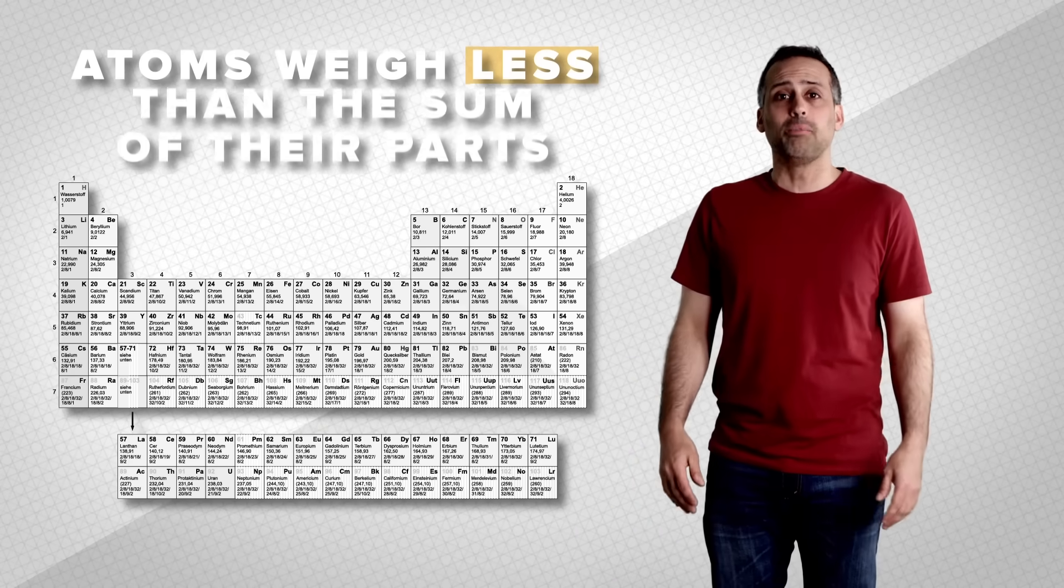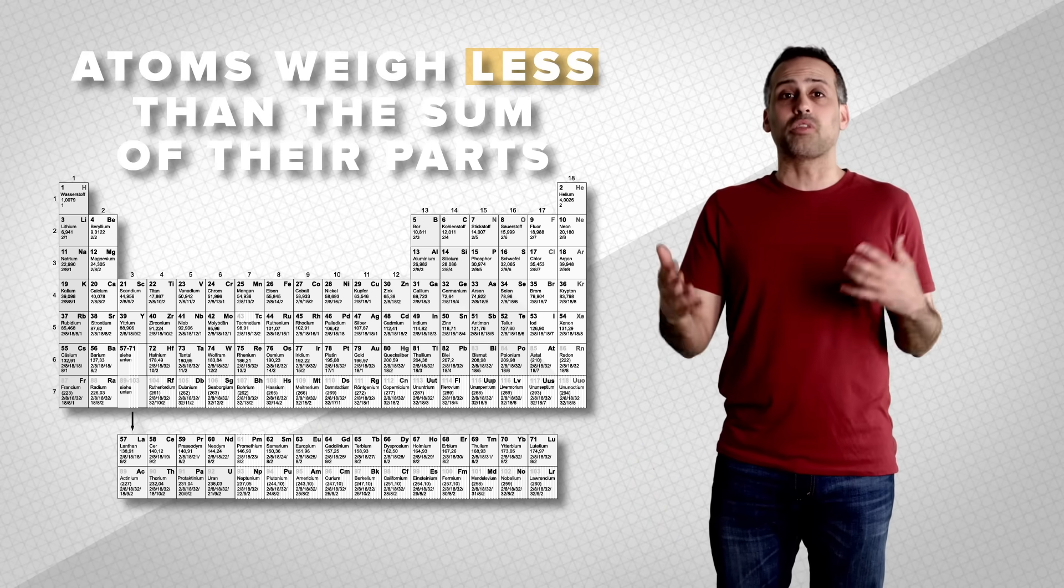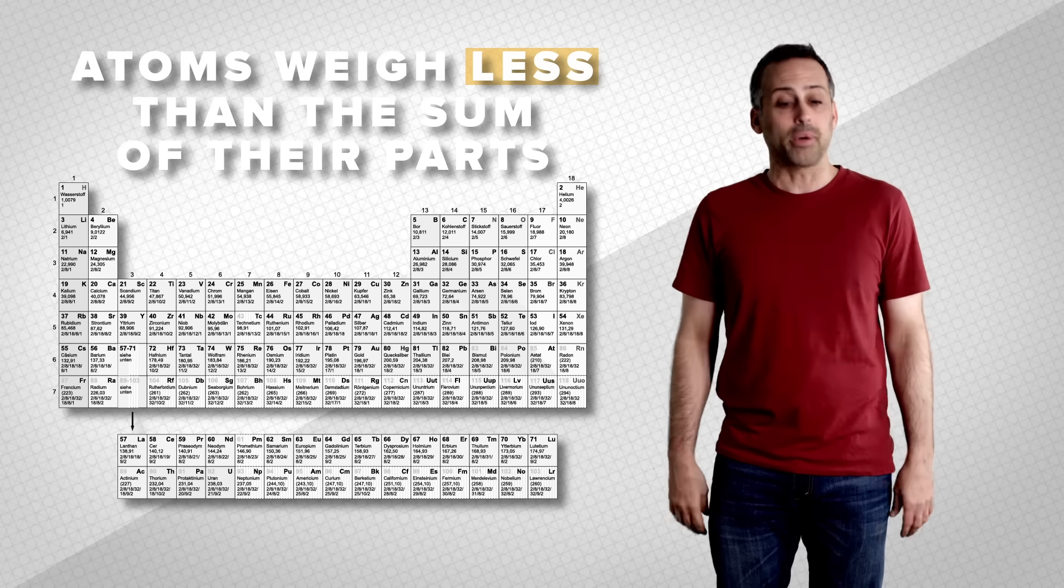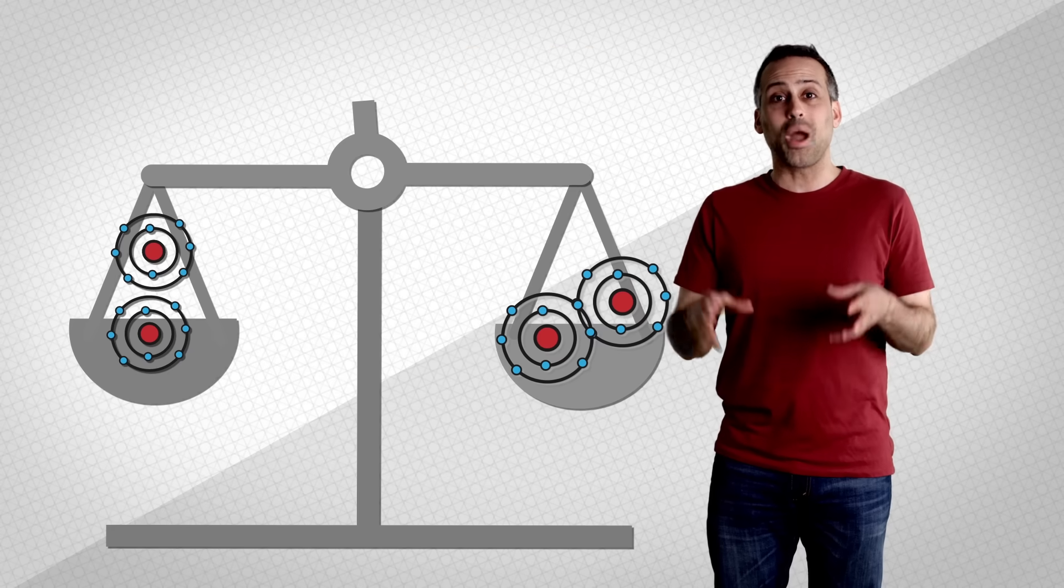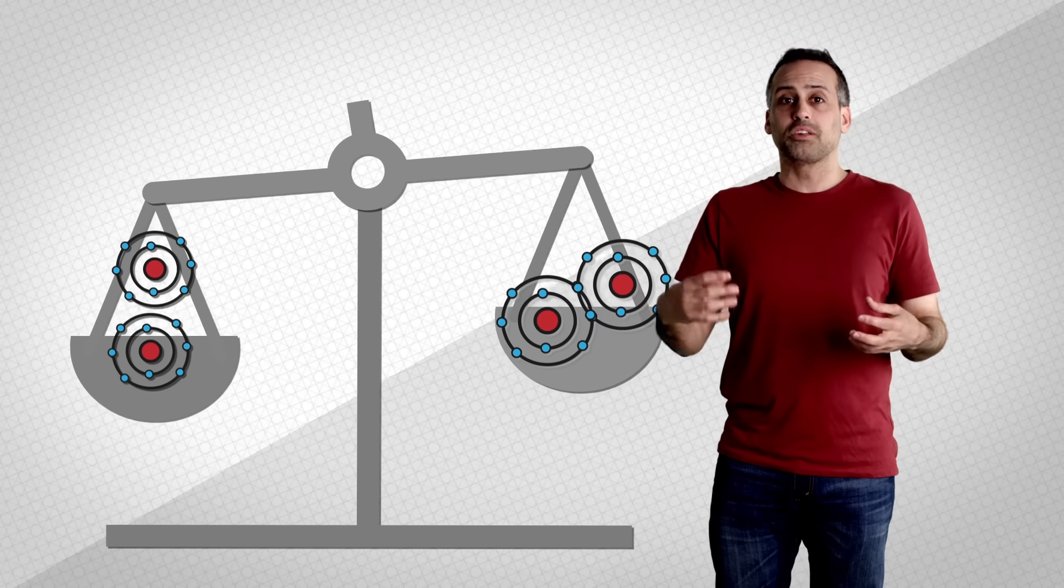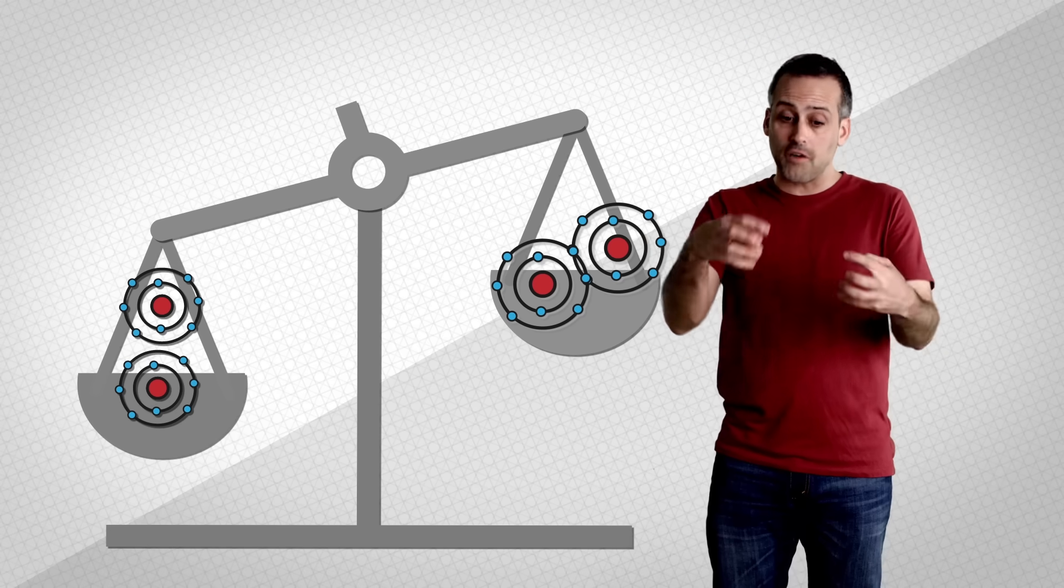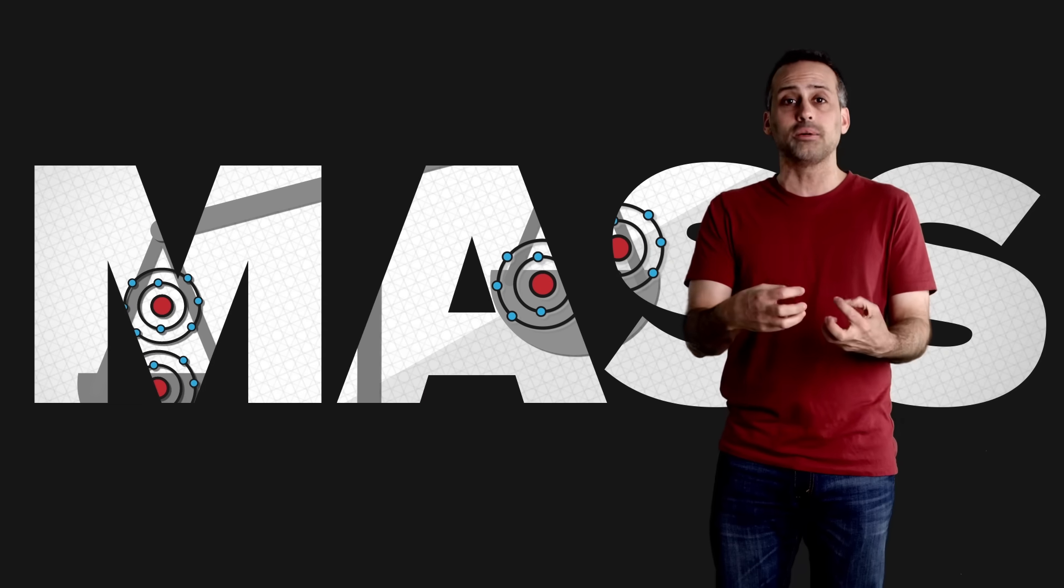In fact, barring weird circumstances, all atoms on the periodic table weigh less than the combined masses of the protons, neutrons, and electrons that make them up. Same is true for molecules. An oxygen molecule weighs less than two oxygen atoms, because the combined kinetic and potential energies of those atoms, once they form a chemical bond, is negative.